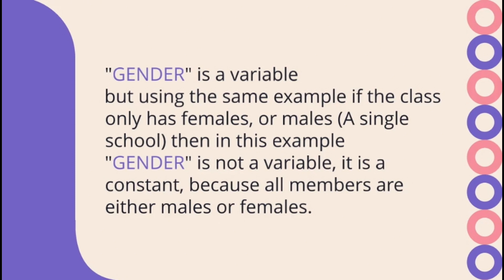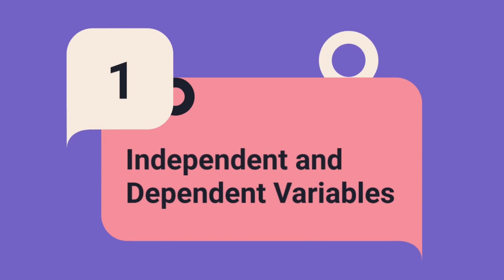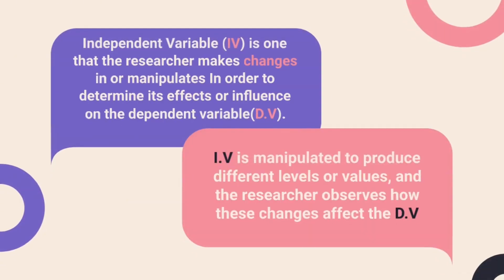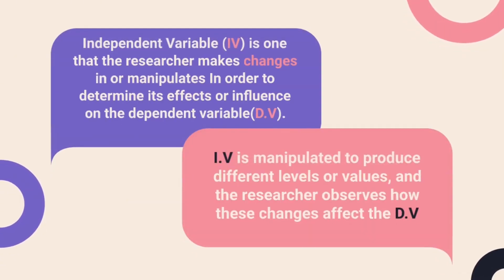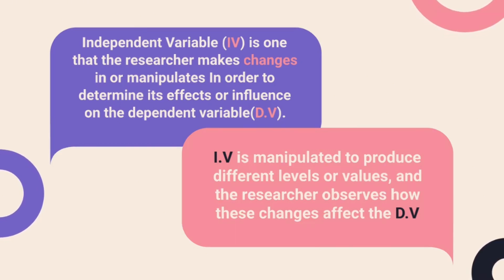Now let's look at our second objective, where we are supposed to understand the types of variables. We shall start with independent and dependent variables. An independent variable is one that the researcher makes changes in or manipulates in order to determine its effects or influence on the dependent variable. It is like the cause, so that we can see an effect on the dependent variable. An independent variable is manipulated to produce different levels of values, and the researcher observes how these changes affect the dependent variable.